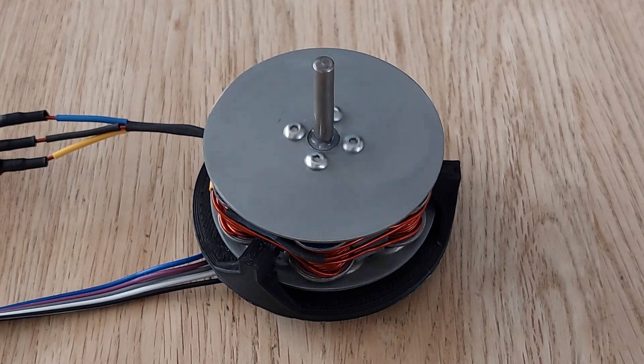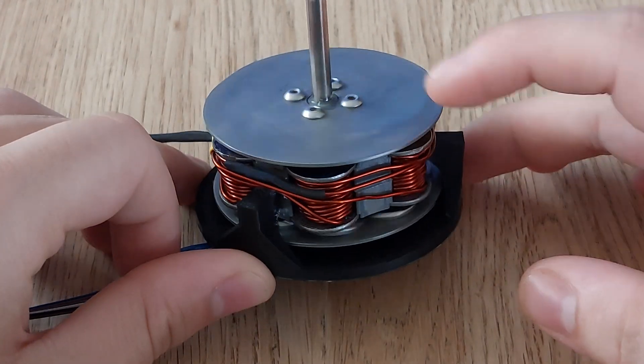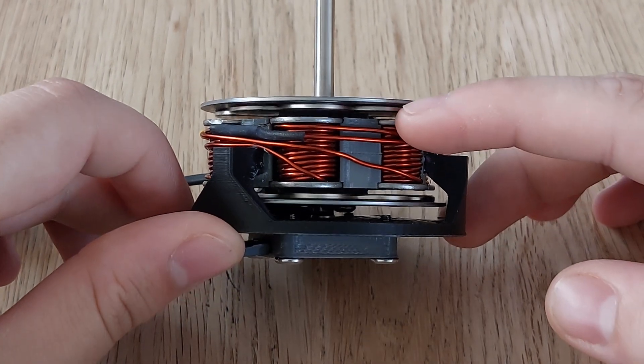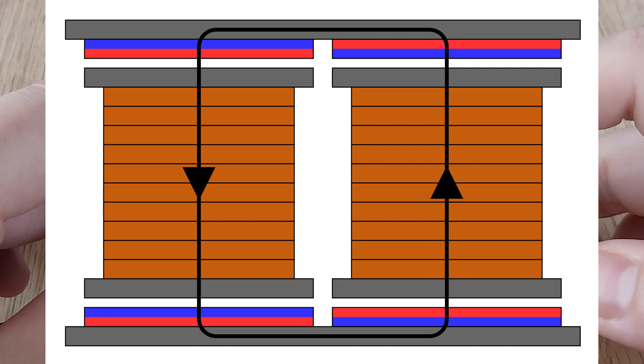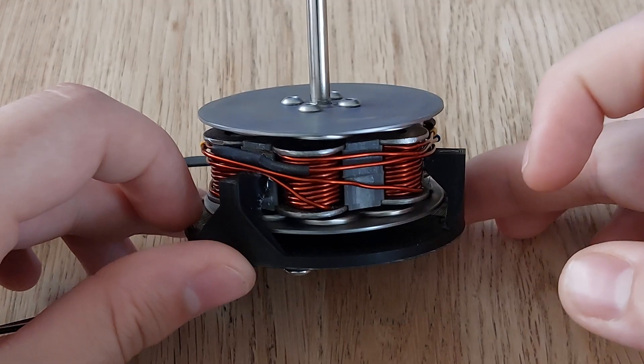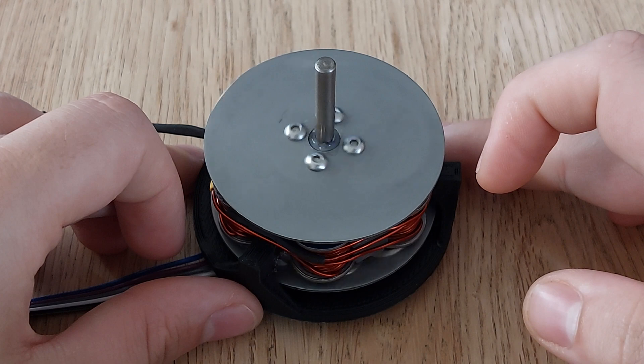The rotor consists of two steel discs, one on the top and one on the bottom, with magnets mounted on the side of the stator. These are mounted in alternating polarity. The steel discs ensure the reluctance is kept low.